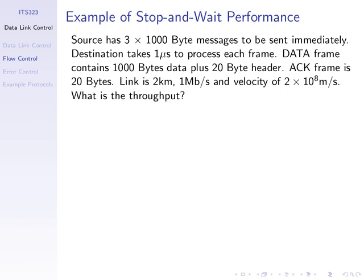Throughput and efficiency — we need to include the time of not sending anything. Before the midterm you calculated throughput simply as the size of real data divided by the total size of the frame. But when we have to wait for an ACK we must include the time that we don't send anything. The efficiency is the time spent transmitting real data divided by the total time. Minimizing waiting time increases the throughput.